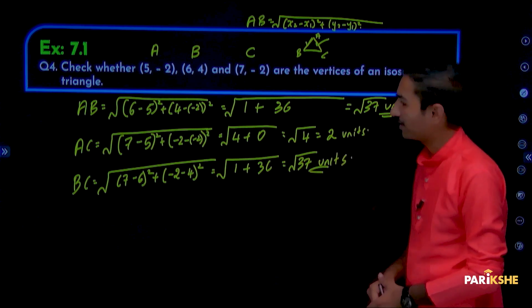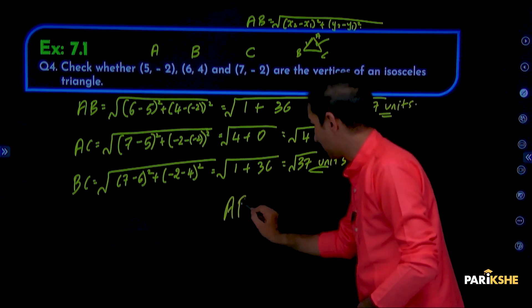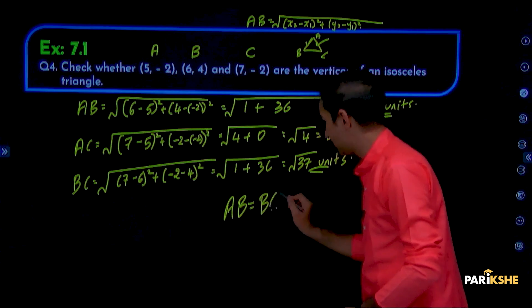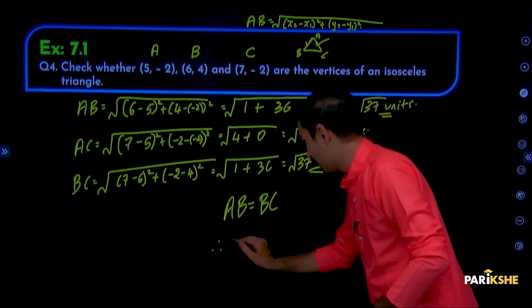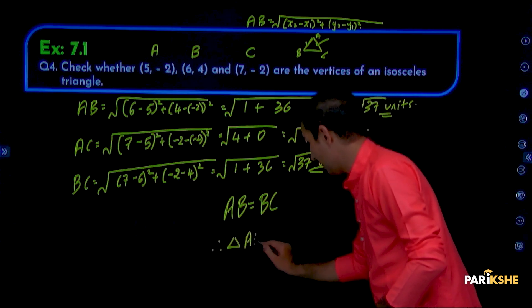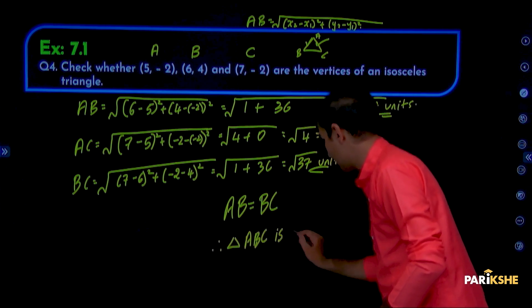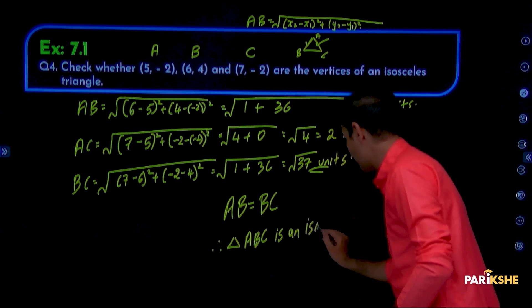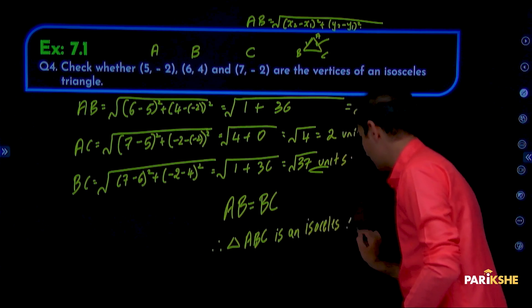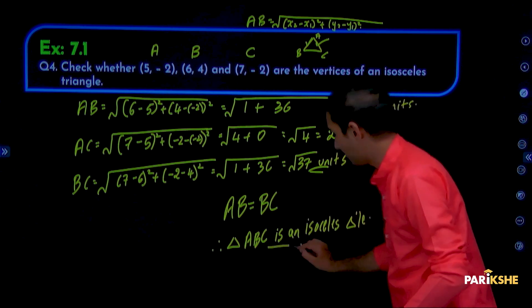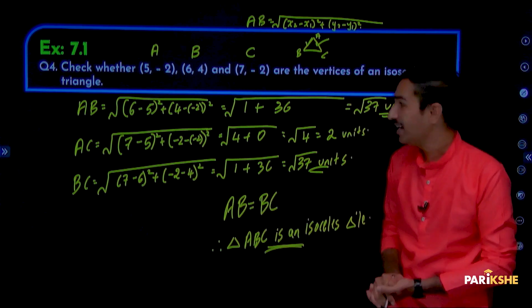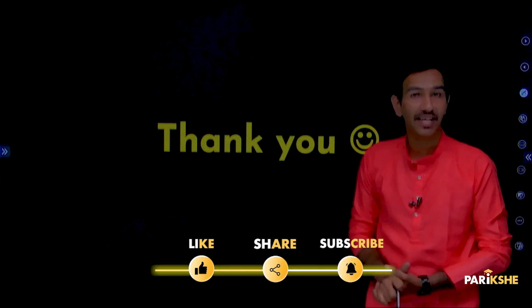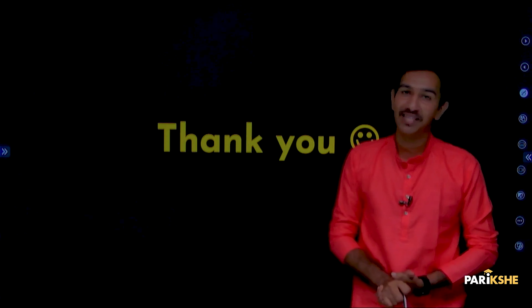So, AB is equal to BC, both are √37 units. Therefore, triangle ABC is an isosceles triangle, because two sides are equal to each other. So that is the conclusion for this topic. We will learn the next topic in the next session. Take care and subscribe to Pariksha YouTube channel. Thank you so much.